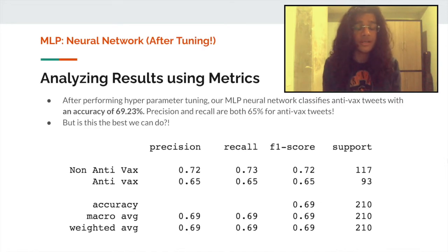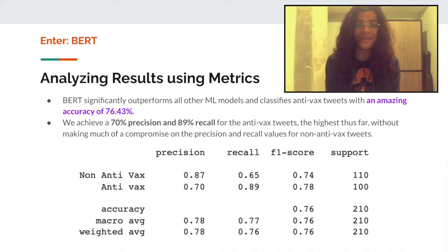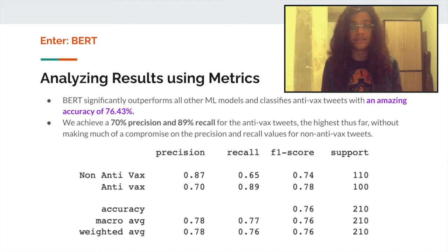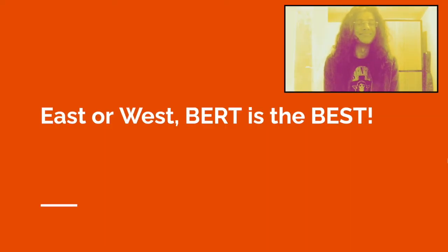We then perform hyperparameter tuning and get more robust values for our learning rate, bringing accuracy up to 69.23%. But is this the best that we can do? In comes BERT! BERT is one of the most popular transformer-based networks for language understanding, and it significantly outperforms all the other machine learning models, performing this classification task with an average accuracy of 76%. Both precision and recall for the anti-vax data points are now above 70%. So it's very safe to say that BERT is indeed the best.